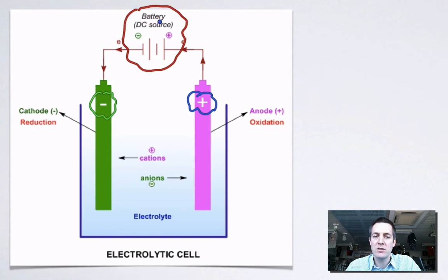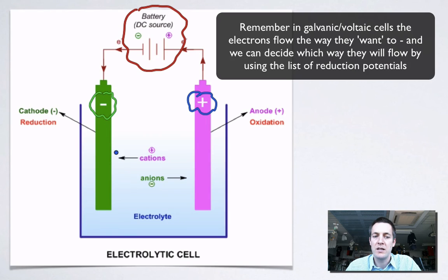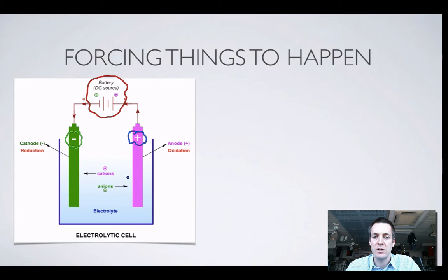So it's this external power supply that is forcing the electrons to head in a certain direction. It's forcing the electrons to be given to the positive ions and it's forcing them to be taken away from the negative ions in the electrolyte.